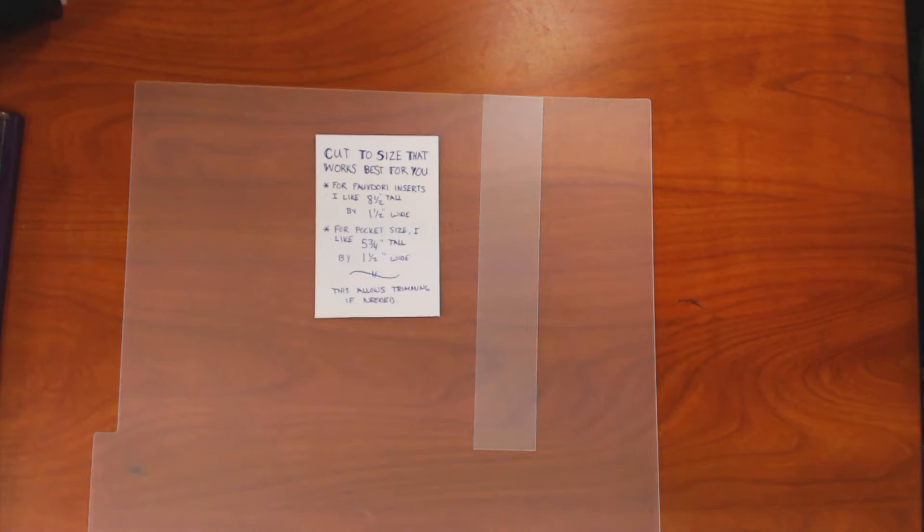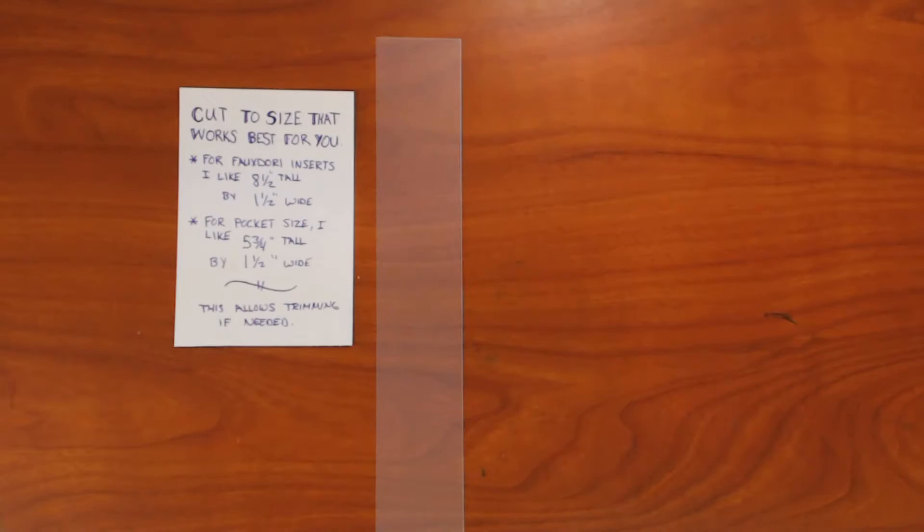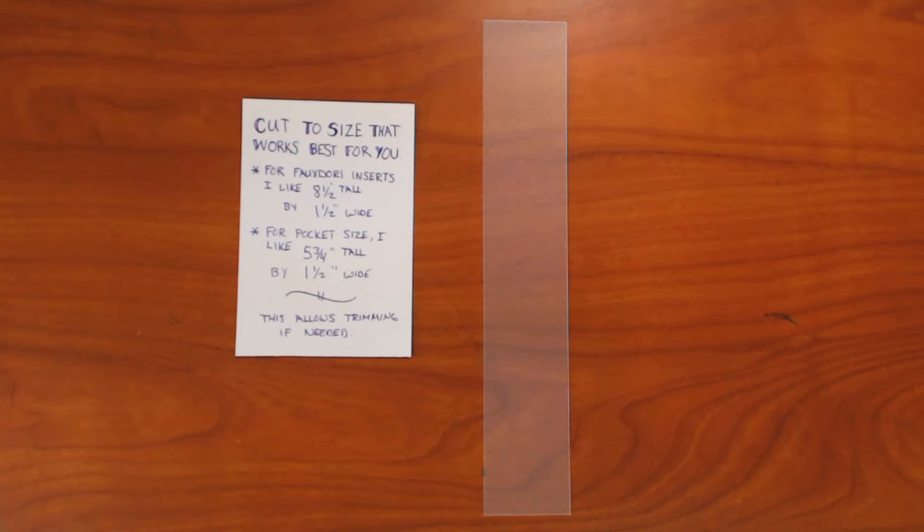And I like to cut the size that works for me at eight and a half inches tall by one and a half inches wide. This size leaves a little bit of excess length that you can trim off later on if needed once you put it into your planner. So you can customize the length that works just right for you.